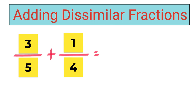Now let's move on to our topic: how to add dissimilar fractions. As you can see in the example, we have three-fifths plus one-fourth. Three-fifths and one-fourth are dissimilar simply because the denominators are not the same. We cannot add the numbers directly. All we need to do is to get the LCD, or the least common denominator.